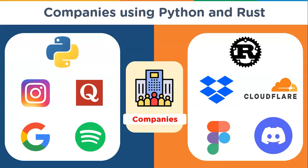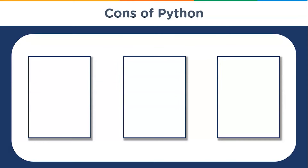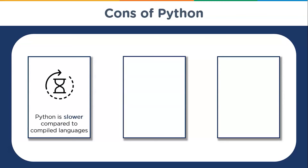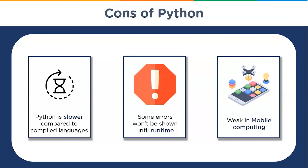Now let's look at some cons of Python and Rust. Starting with Python: as it's an interpreted language, Python is slower compared to many compiled languages. Some errors don't show up until runtime, making them difficult to find. Python is also weak in mobile computing.